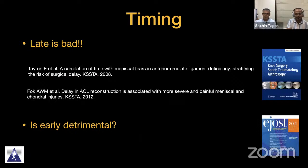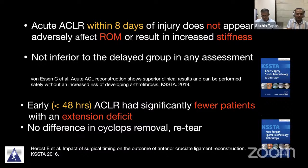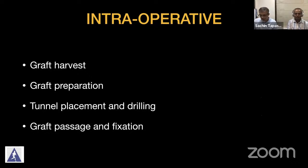Regarding timing: late surgery for ACL leads to progressive meniscus and chondral changes and is detrimental to outcomes. However, early surgery is not necessarily detrimental. Carl Erickson's group found that acute ACL surgery within eight days was not inferior in functional outcomes. A paper from Innsbruck found surgery even within 48 hours had no extension deficit, no cyclops, and no re-tear rates. The knee must be quiet, with adequate range of motion and quadriceps function — the number of days really does not matter.